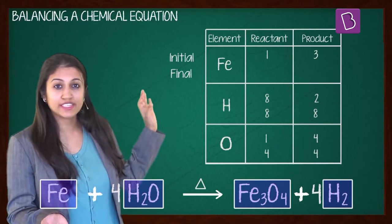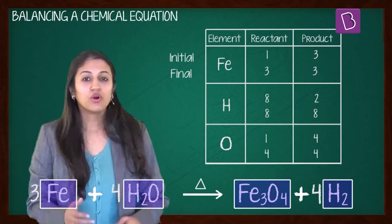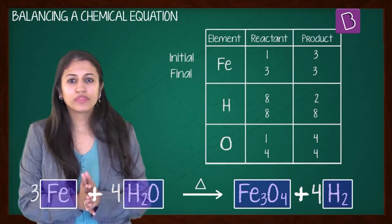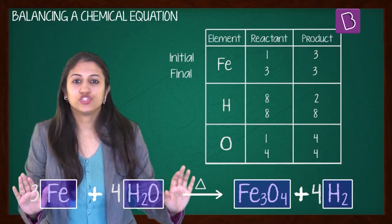So that's what we need to do to balance. In the reactant, I'll have 3, and in the product I'll have 3 as well. What does my equation become now? 3Fe plus 4H2O giving you Fe3O4 plus 4H2.